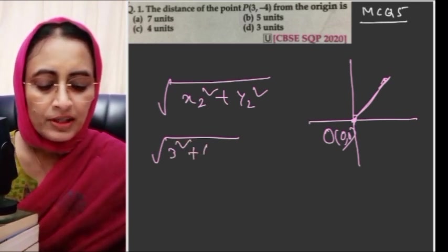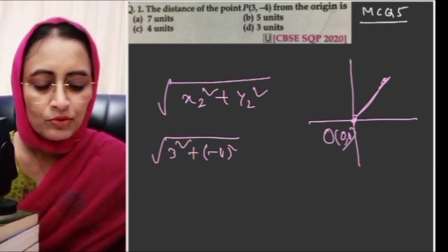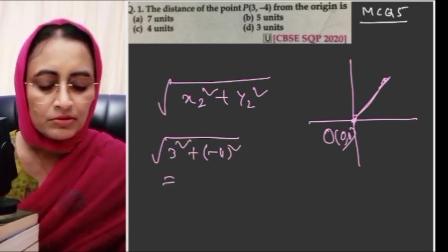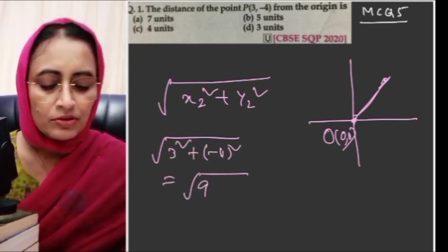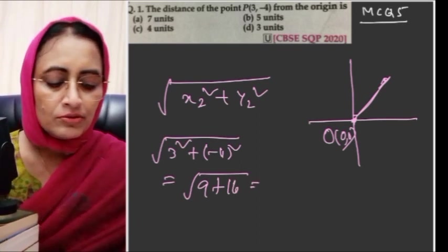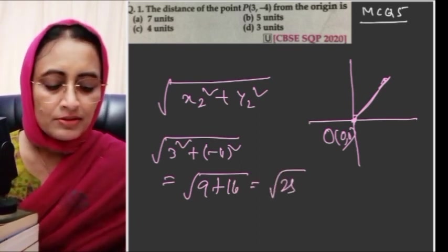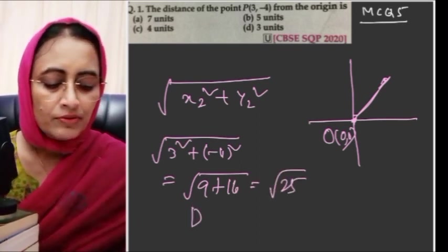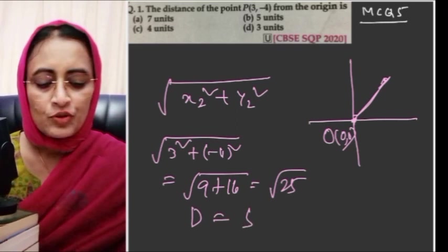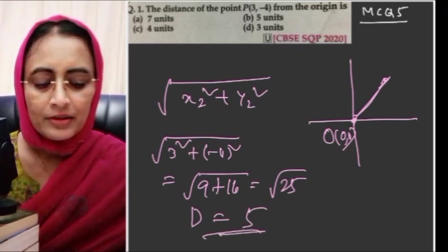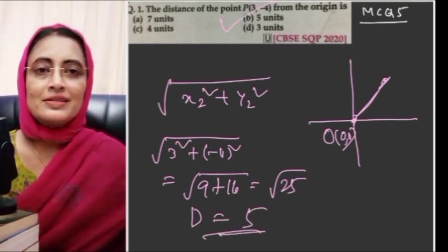Square root of 3 square plus (minus 4) whole square equals square root of 9 plus 16 equals square root of 25, so distance equals 5. Answer is option B.